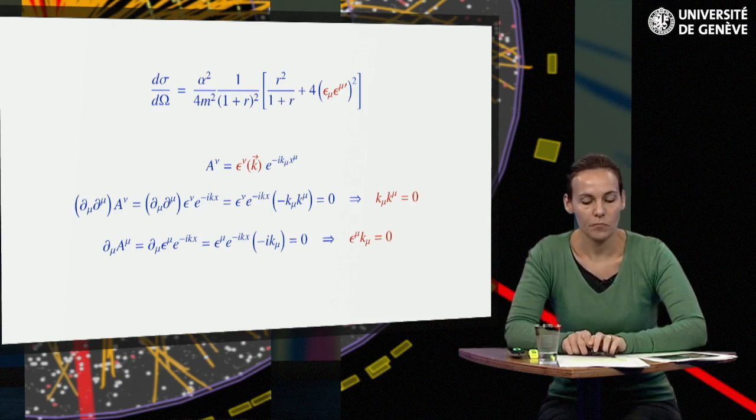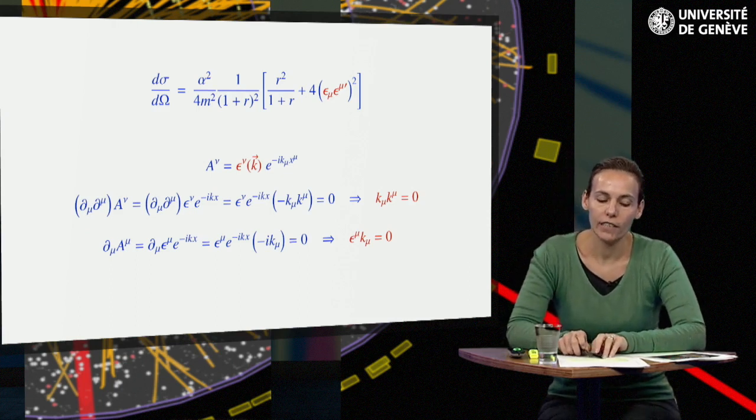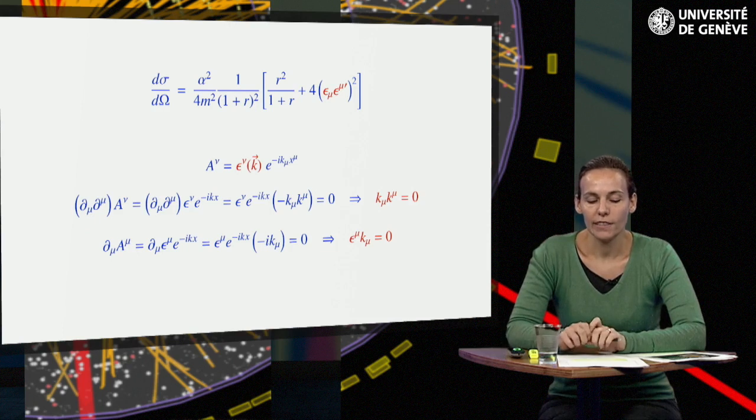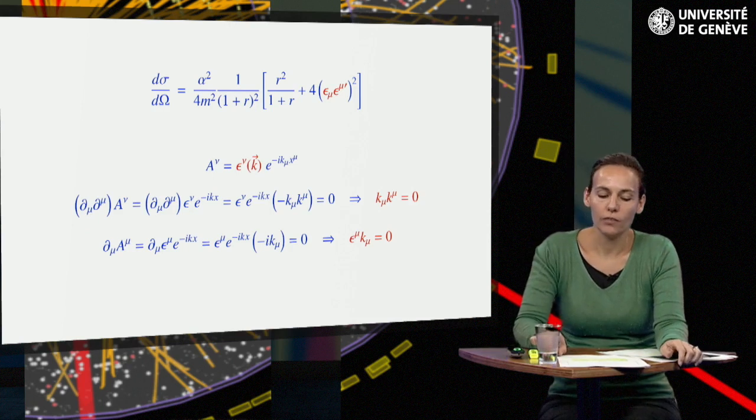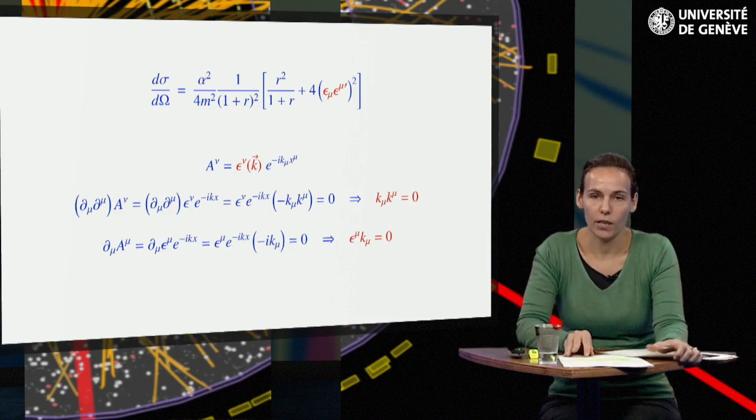The four vector of polarization epsilon indicating the electric field direction is thus orthogonal to the four momentum of the free photon k. In addition, this gauge condition shows that the photon wave function has only three independent components, not four. It is therefore justified to call the photon a vector particle.